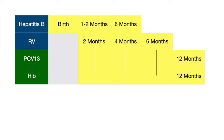Next is HIB, which covers against Haemophilus influenzae type B. It's important to know that this is just for type B, because there are also non-typable strains that often lead to mucosal infections like ear infections and sinus infections. Type B leads to a lot of invasive diseases, which is why we vaccinate against it. HIB is given at two, four, and six months of age and again at one year of age.